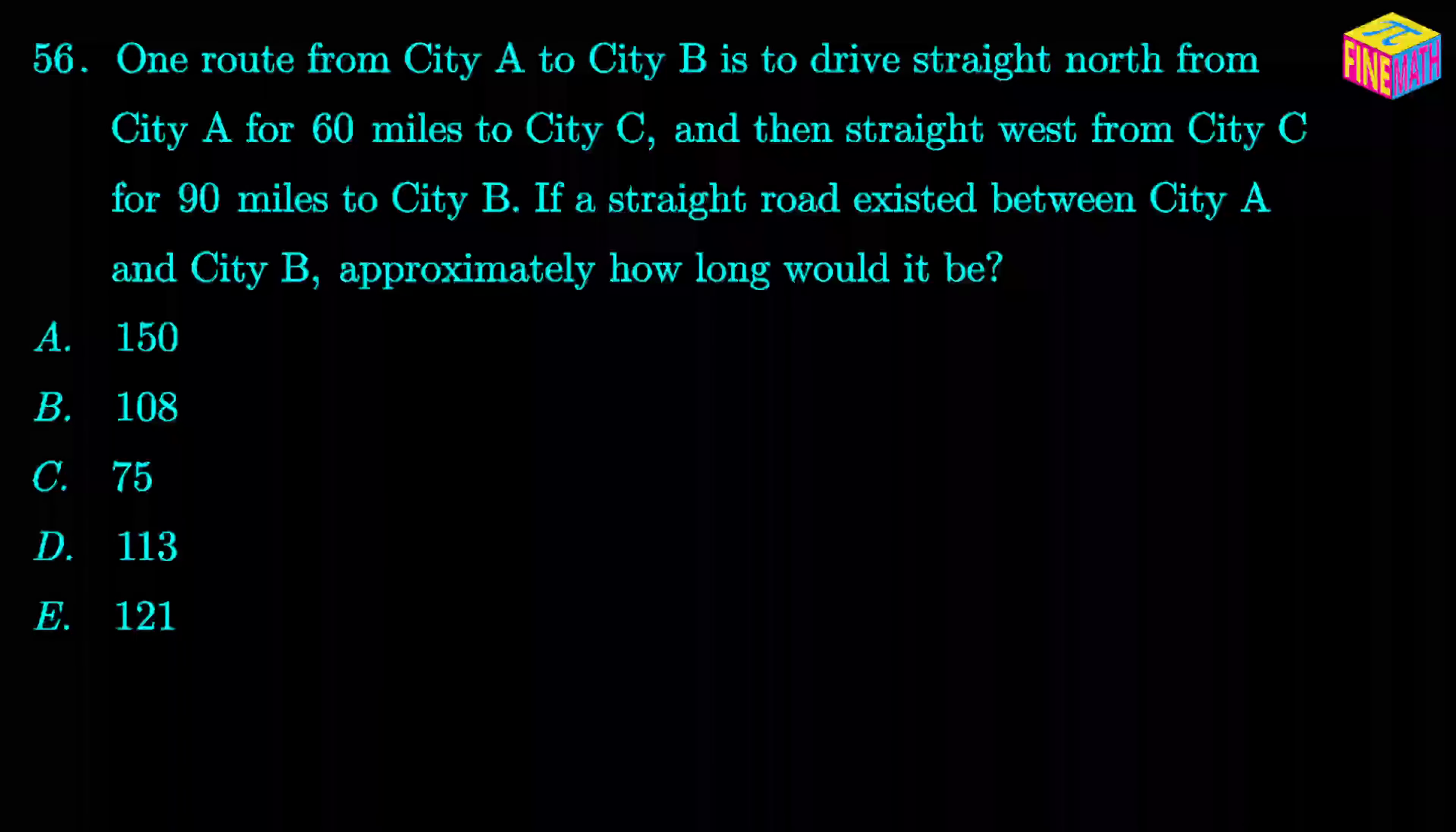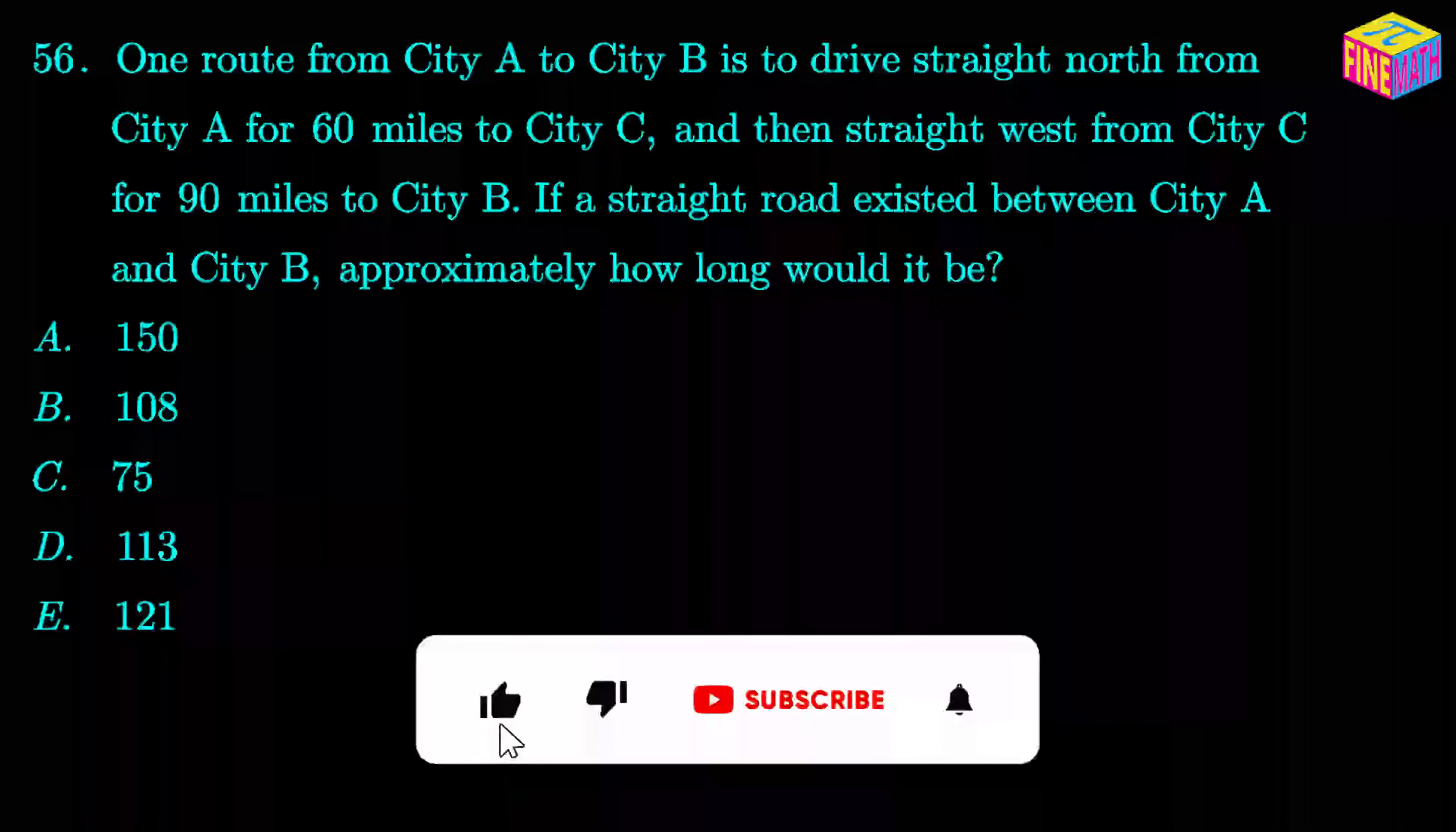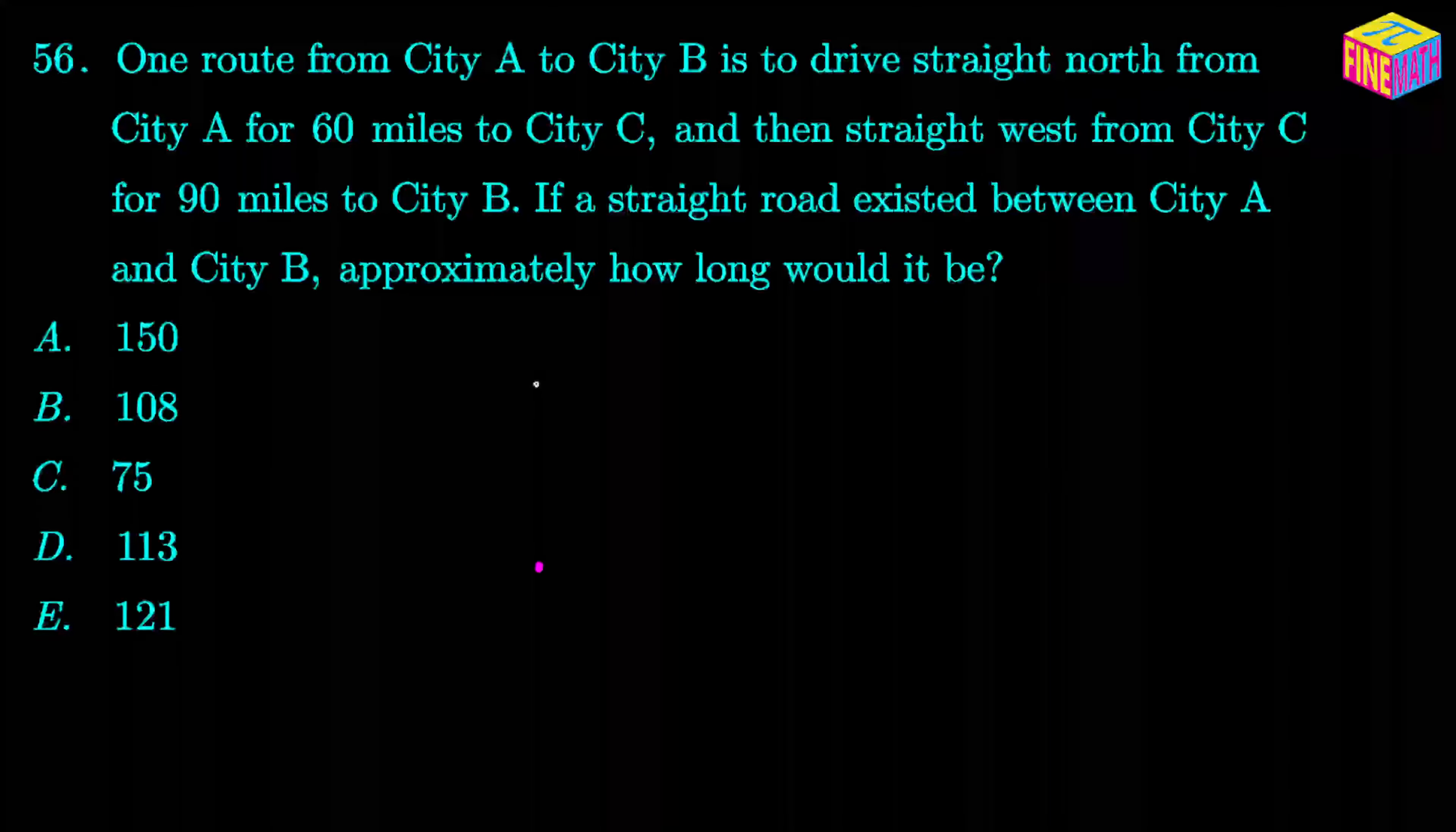So essentially we have three cities here. We have city A, then city C and city B. So suppose we assume that city A is right here and then from there if we drive straight north for 60 miles, we are going to reach city C.